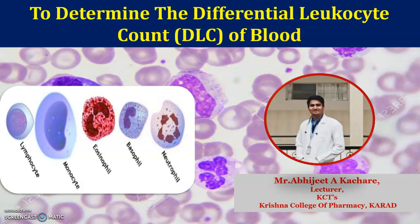You know there are different leukocytes present in our blood. They are divided into two subtypes: granulocytes and agranulocytes. We will determine the differential leukocyte count in our blood and discuss each one by one.